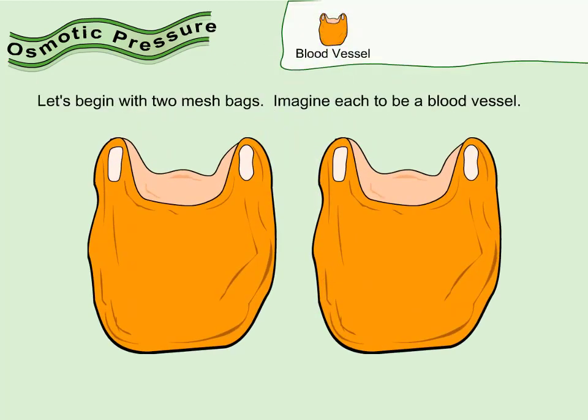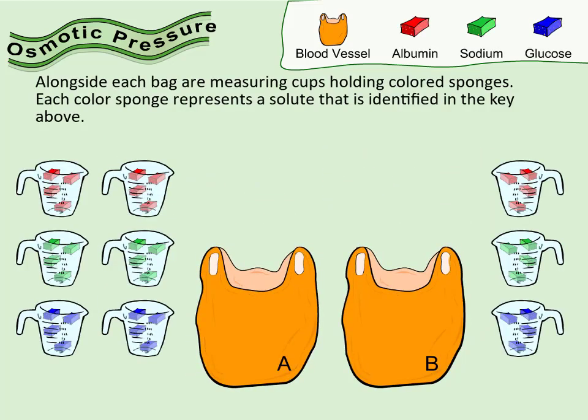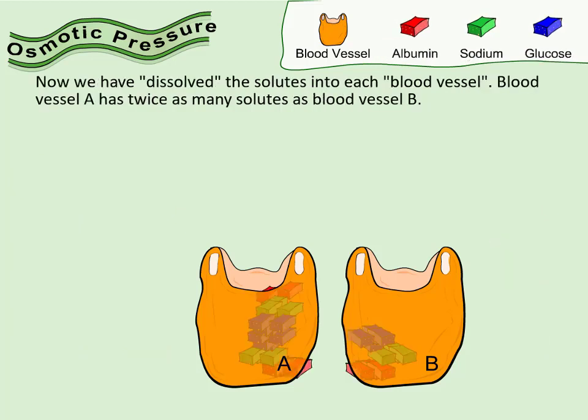Imagine each to be a blood vessel. Alongside each bag are measuring cups holding colored sponges. Each color sponge represents a solute that is identified in the key above. Now we have dissolved the solutes into each blood vessel. Blood vessel A has twice as many solutes as blood vessel B.